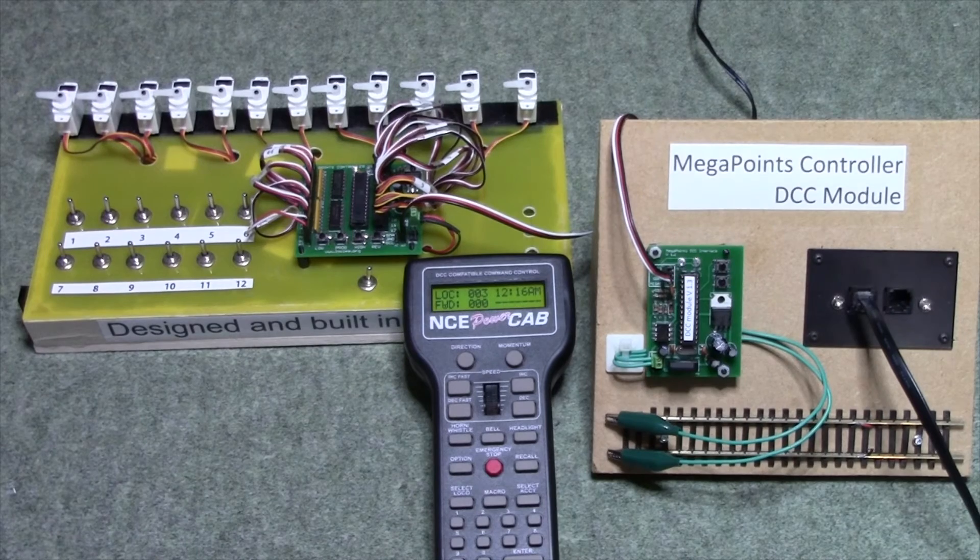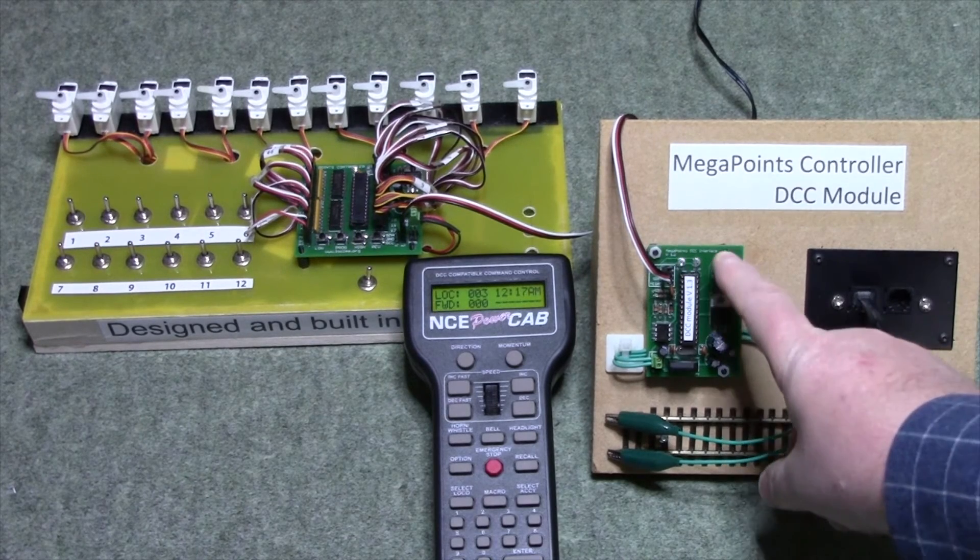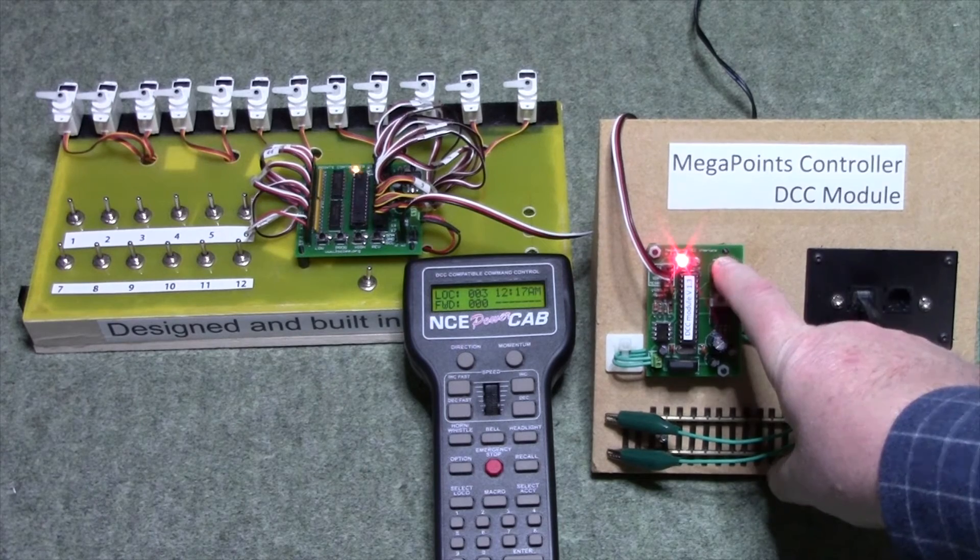To set the DCC base address for the unit, press and hold the top button for one second until the red light comes on.